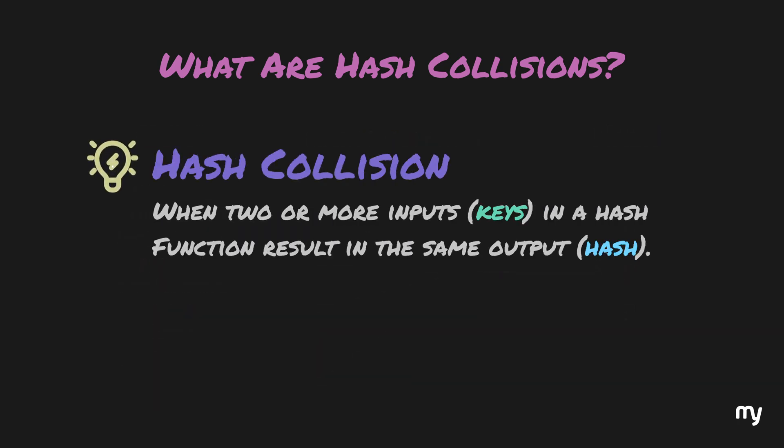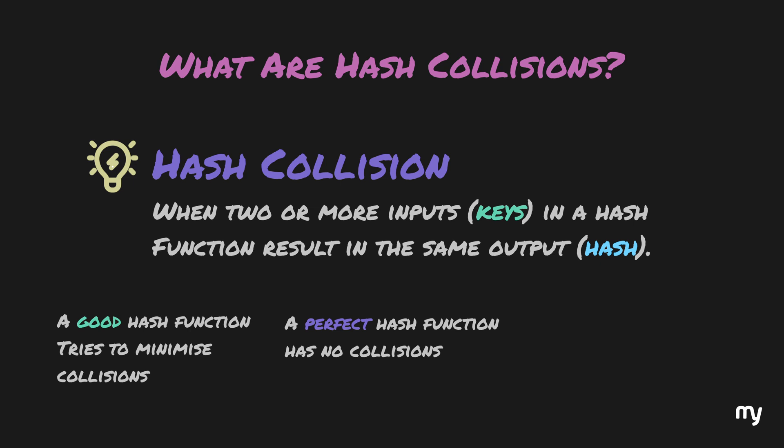When two or more inputs into a hash function result in the same output, it is called a hash collision. A good hash function tries to minimize hash collisions. Subsequently, a perfect hash function is the one which has no hash collisions at all. If a function satisfies all rules of a hash function, but has a lot of hash collisions, it is still a hash function, just not a very good one.